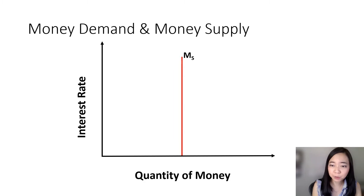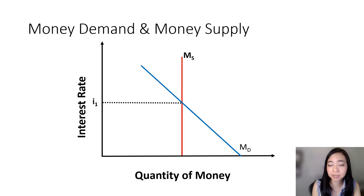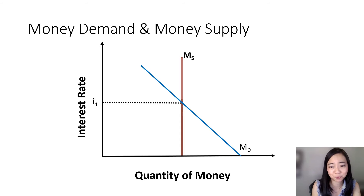Now we put the money supply and money demand together. At the intersection of money demand and money supply curve, we find the equilibrium interest rate as well as a quantity of money.